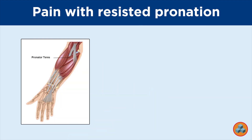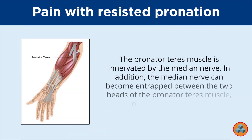Finding 2: Pain with resisted pronation. The pronator teres muscle is innervated by the median nerve. In addition, the median nerve can become entrapped between the two heads of the pronator teres muscle, often producing pain.